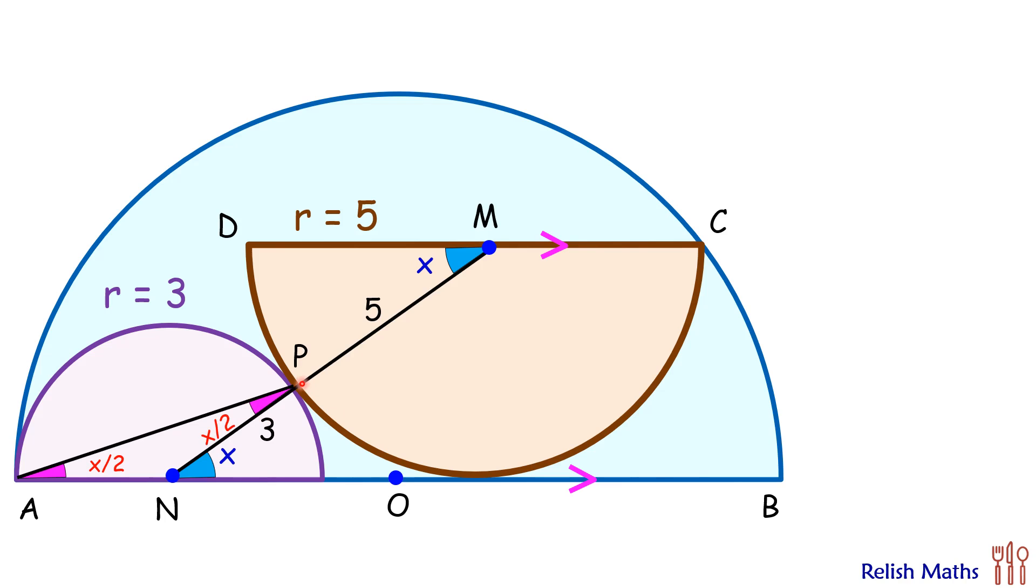Same way, let's join point P and C. Now PM and MC are radius 5 cm, thus these two angles, that's angle P and angle C, will be equal. By exterior angle theorem if this angle is x, then this angle will become x/2 and x/2. So this is x/2 and this angle is x/2.